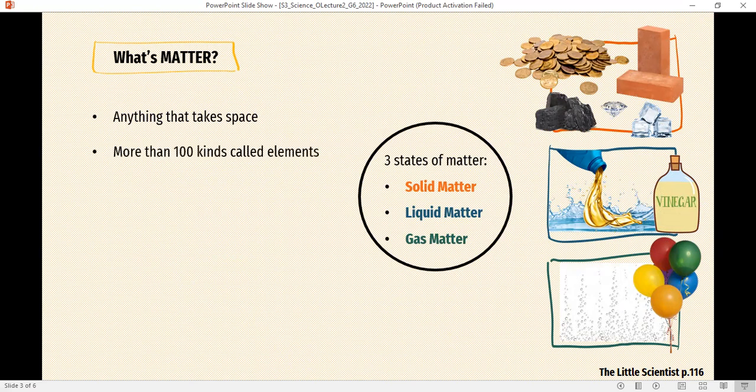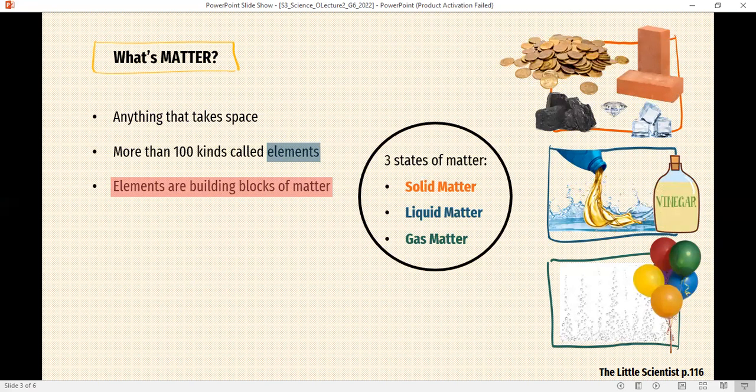There are more than 100 kinds called elements. Scientists studied everything around you and they found almost 112 elements that make up everything: coal, bricks, vinegar, helium, oxygen. They found that elements are the building blocks of matter. If you look around you, I want you to say everything is made of matter and matter is built out of elements.